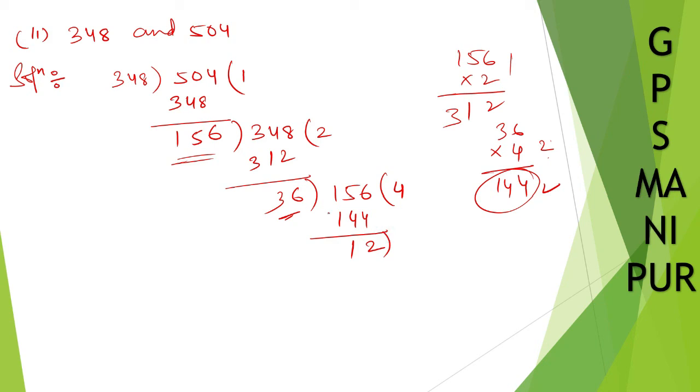Now, 12, you divide to 36 again. Until this division goes on, until you get the remainder as 0. So here, 12 times 3 is 36. And finally, we got the remainder as 0.